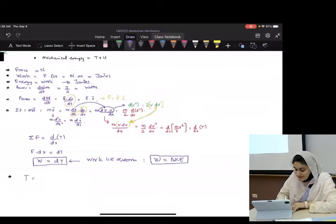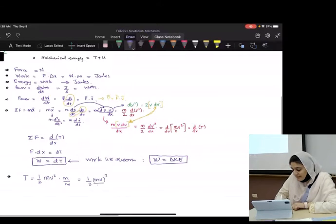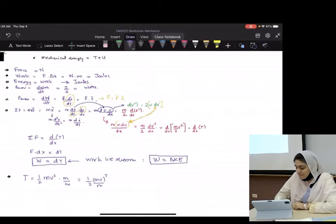So T is what? Can I multiply it with M and divide it by M? Yeah. Can I rewrite it as this? Sure. What is MV?